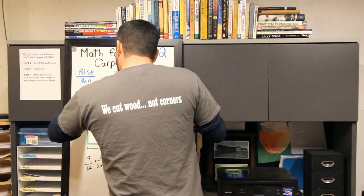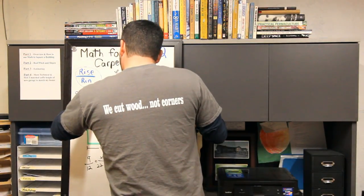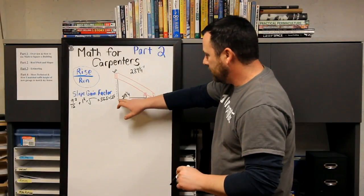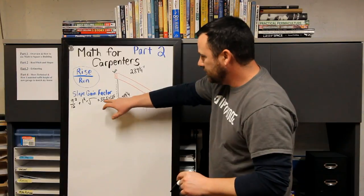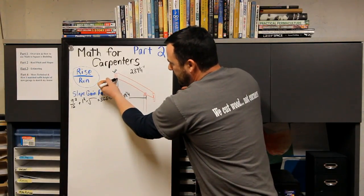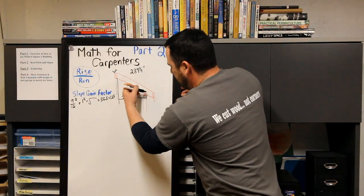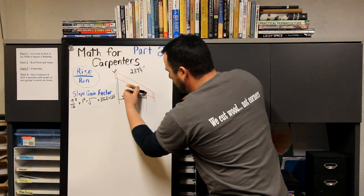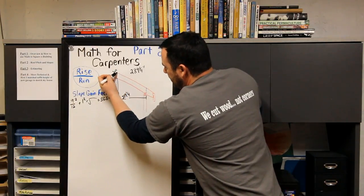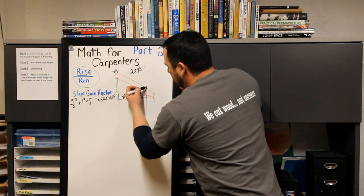So my slope gain factor equals 1.25. Now that you have your horizontal and you know each slope gain factor of 1.25, you can figure out the length. What you want to do is you want to do a plumb up to here, then you know the distance from here to here.